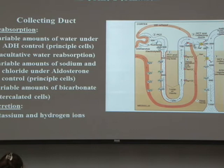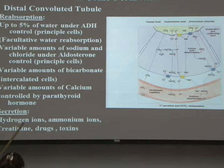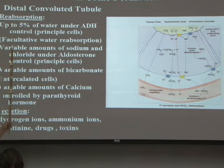In terms of facultative versus obligatory water movement — obligatory water movement occurs in the proximal convoluted tubule and thin parts of the loop, where concentration gradients force water to move. Facultative water reabsorption in the distal convoluted tubule and collecting duct is controlled by hormones ADH and aldosterone — about 5% of the water is controllable there.